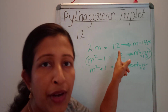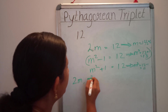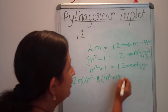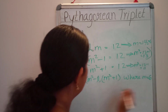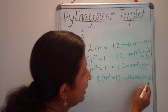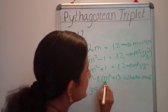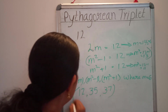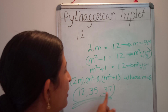Now we can very easily find the Pythagorean Triplets. Our formula is 2M, M square minus 1, M square plus 1. With M equal to 6: 2M equals 2 into 6 equals 12. M square minus 1 equals 6 square minus 1 equals 36 minus 1 equals 35. M square plus 1 equals 6 square plus 1 equals 36 plus 1 equals 37. So the Pythagorean Triplets are 12, 35, and 37.